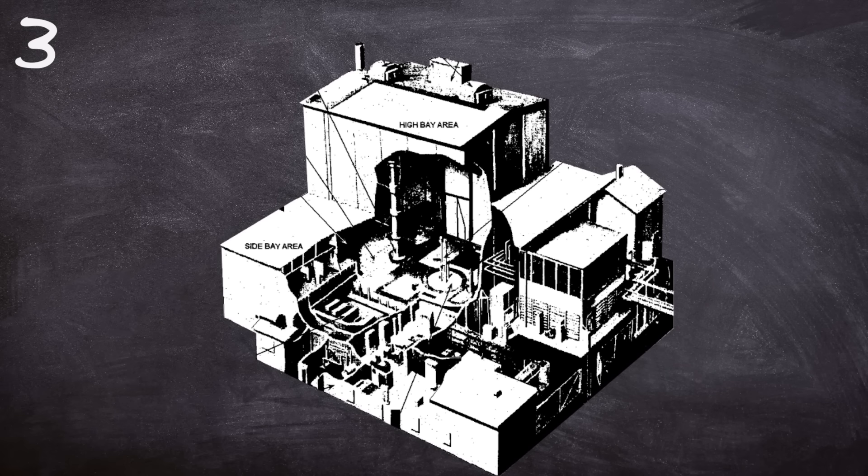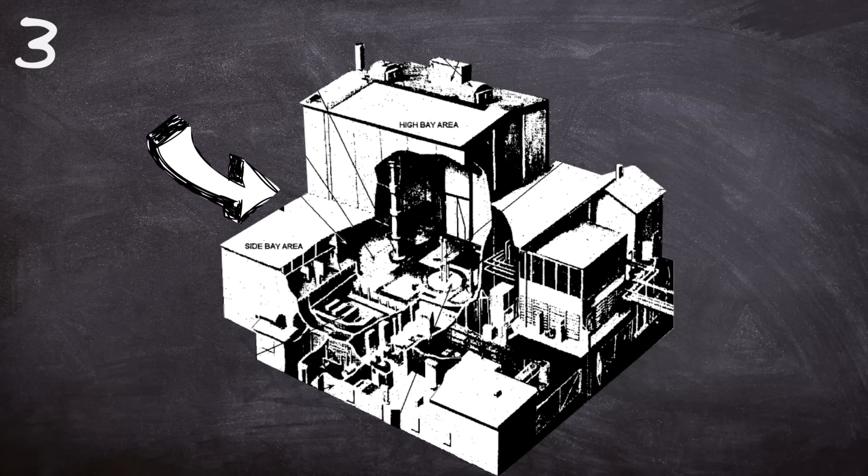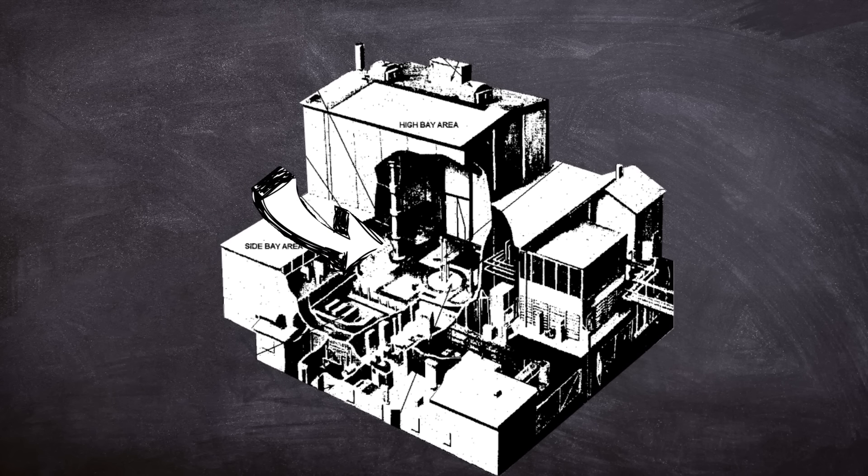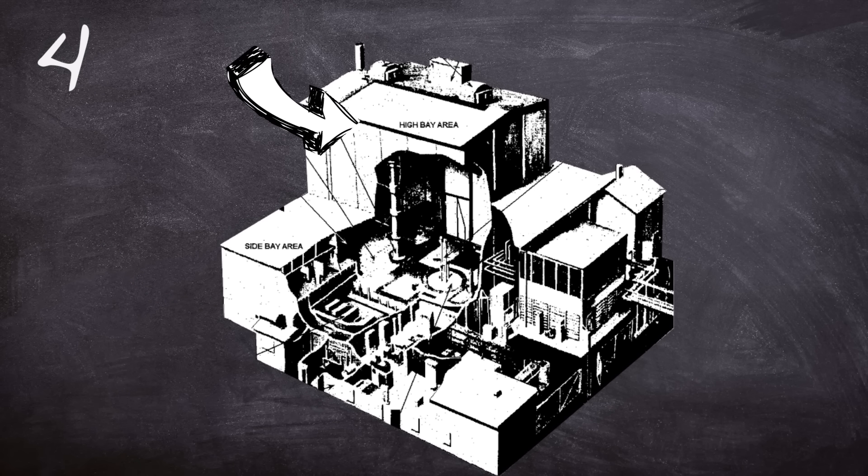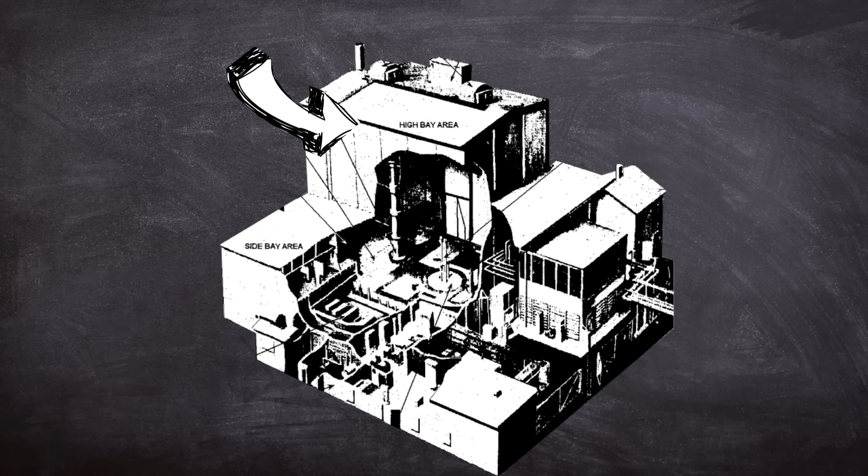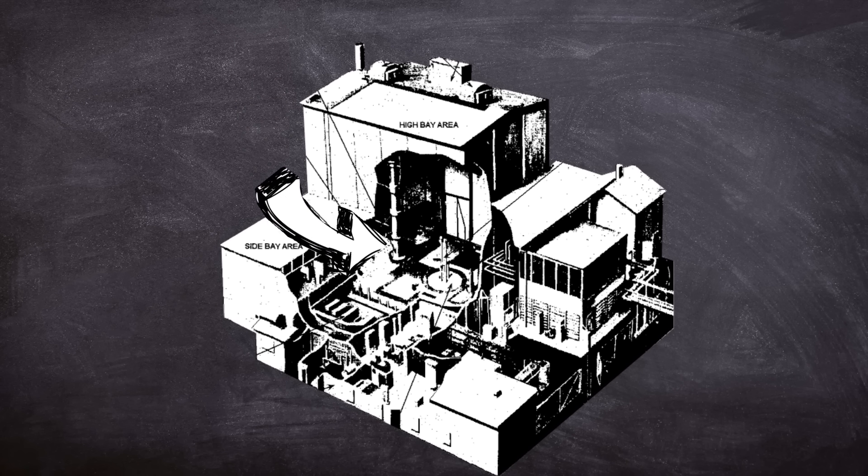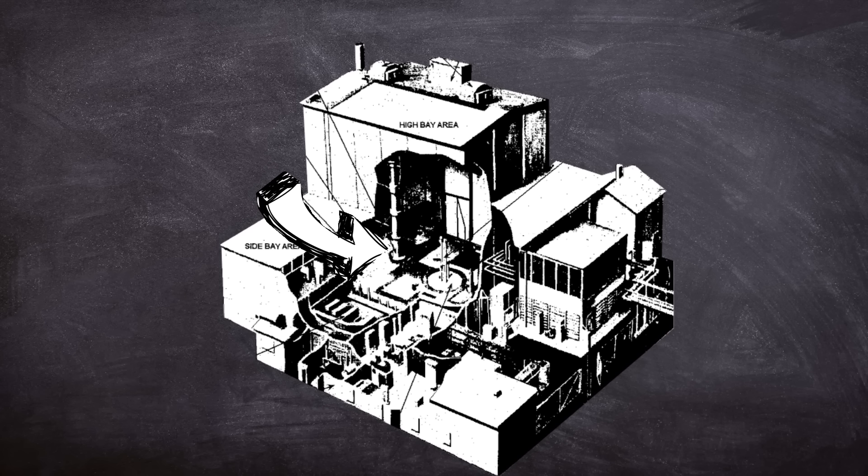The reactor building of the SRE consisted of a high bay area, a side bay area and a hot cell facility. The side bay contained the control room, administrative offices, electrical shop and air conditioning equipment. The high bay area, known because of its high roof, housed the reactor and its primary and auxiliary cooling systems, a new fuel storage, a radiated fuel storage, a fuel handling machine and a moderator handling machine which handled the graphite moderator cans.